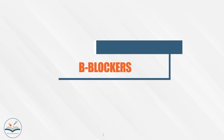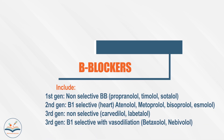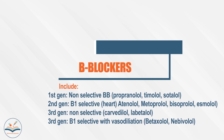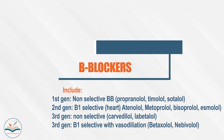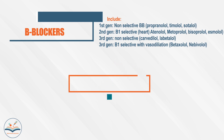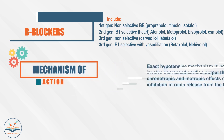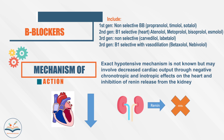Beta blockers have three generations: first generation non-selective, like propranolol; second generation beta-1 selective, like metoprolol; and third generation, either non-selective like carvedilol or beta-1 selective with vasodilation like nebivolol. The exact hypotensive mechanism is unknown but may involve decreased cardiac output through negative chronotropic and inotropic effects and inhibition of adrenaline release from the kidneys.